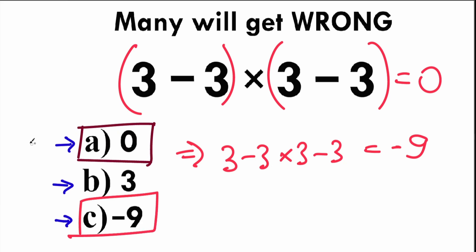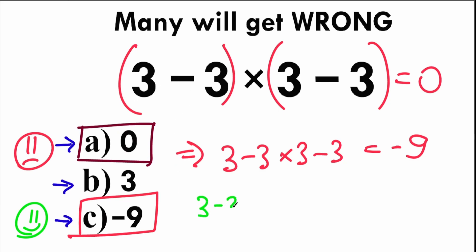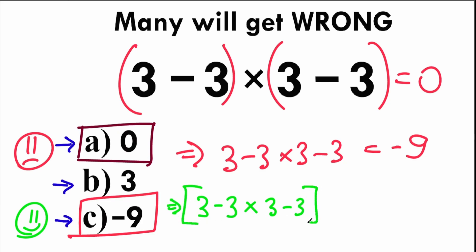If you chose correct answer A zero, you need to review your basic math a little bit, because that is a wrong approach. When you say the correct answer is option C, you should be proud of yourself. If you want to test this in your calculator, just be careful — you need to plug in the whole problem from left to right. Don't plug in three minus three first, because some calculators give you zero instantly without knowing what comes next — the multiplication and the remaining three minus three.